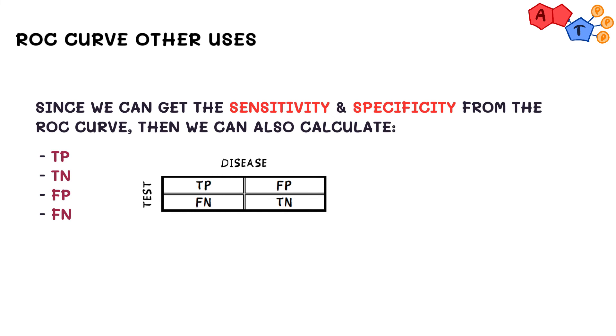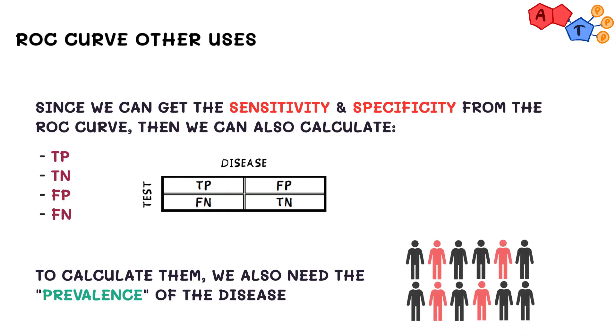However, we also need just a little bit more given. Specifically, we need the amount of people we are testing and how many of them have the disease, aka the prevalence.